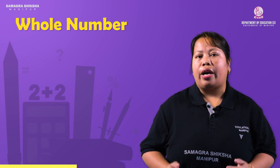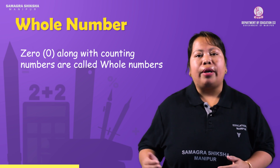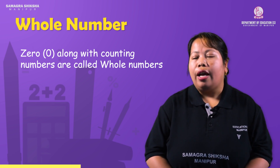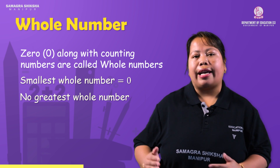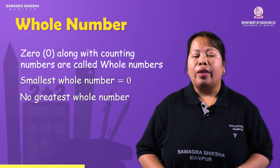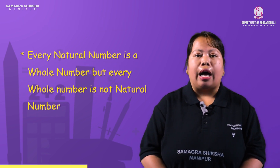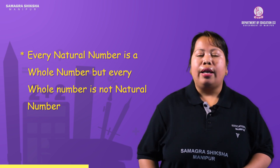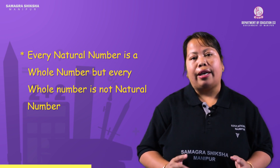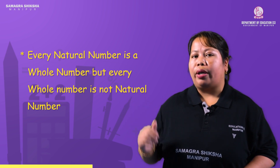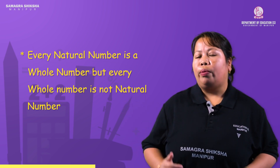The whole numbers are 0 plus the counting numbers — that is, the natural numbers. The smallest whole number is 0 and there is no biggest whole number; it extends to infinity. Every natural number is a whole number, but every whole number is not a natural number, since 0 is a whole number but not a natural number.